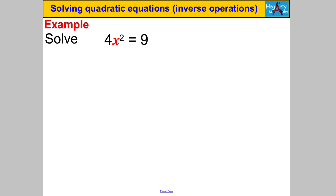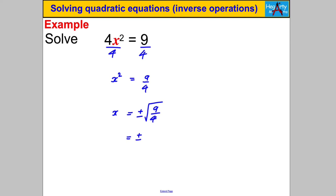Next: 4x² = 9. Divide both sides by 4 to get X² = 9/4. Taking square roots gives X = ± the square root of 9/4. Using surd laws, that's √9 ÷ √4 = 3/2. So X = 3/2 or X = −3/2.